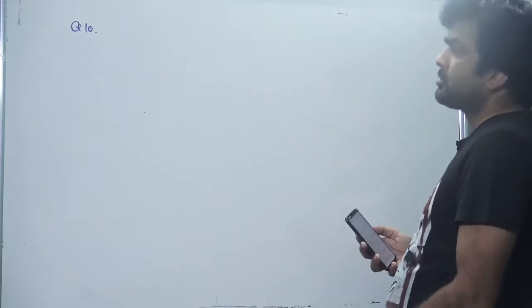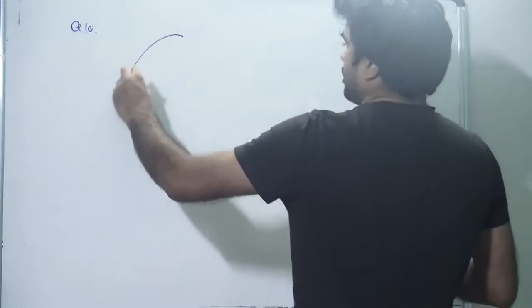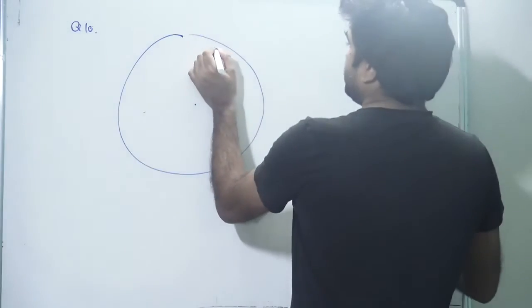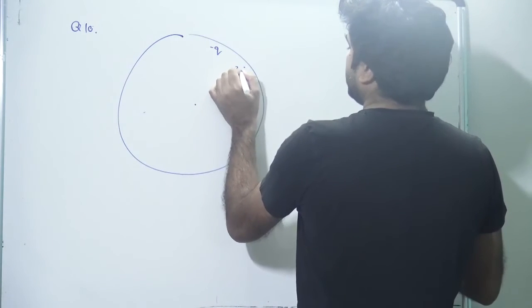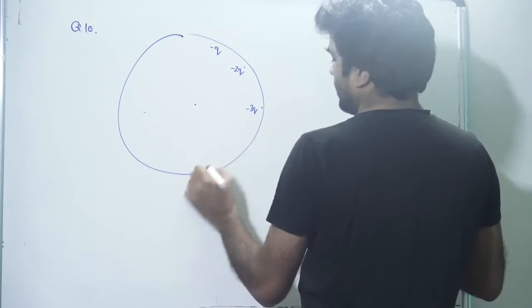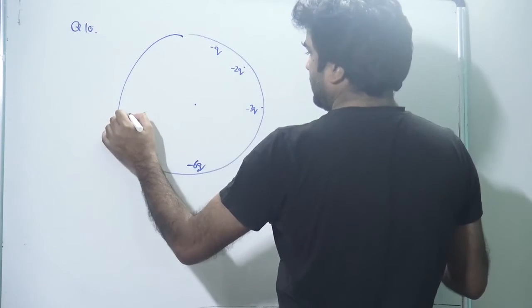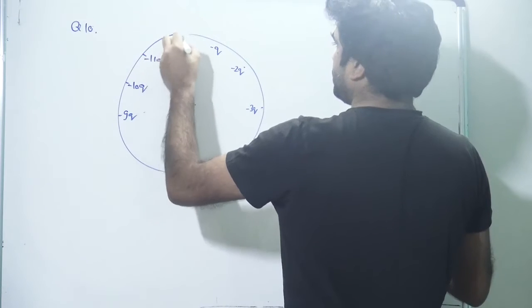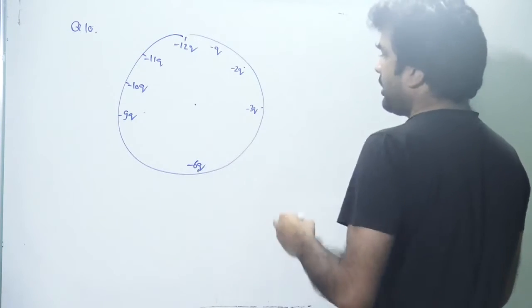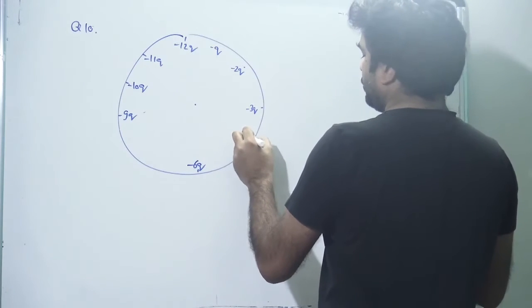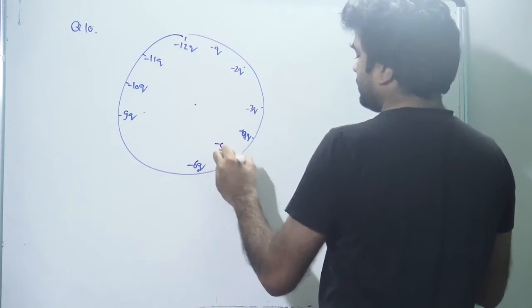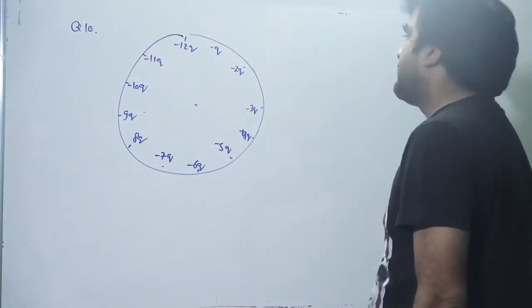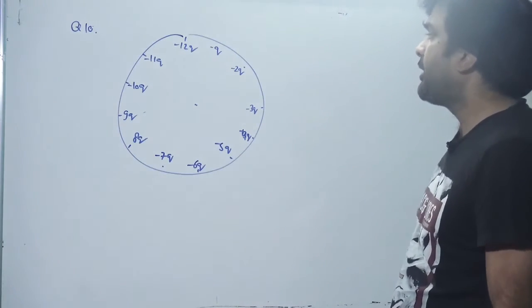Question number 10: there is a clock and on the clock, negative charges are fixed at each hour position. The charges are: -Q at one position, -2Q, -3Q, -6Q, -9Q, -9Q, -10Q, -11Q, -12Q, and positive charges 4Q, 5Q, 7Q, 8Q at the remaining positions. We have to find the direction of the resultant electric field due to all these charges.